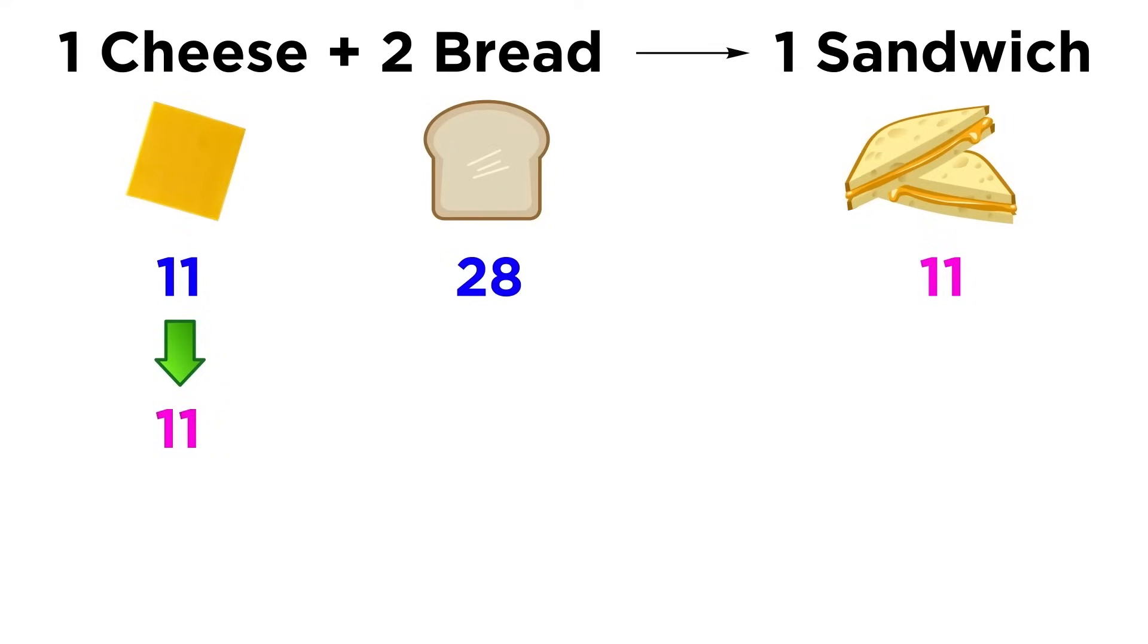So in this case cheese will be the limiting reagent. It will get used up completely in order to make the 11 sandwiches, and some bread will be left over, making it our reagent in excess. There will be 6 slices of bread left over.